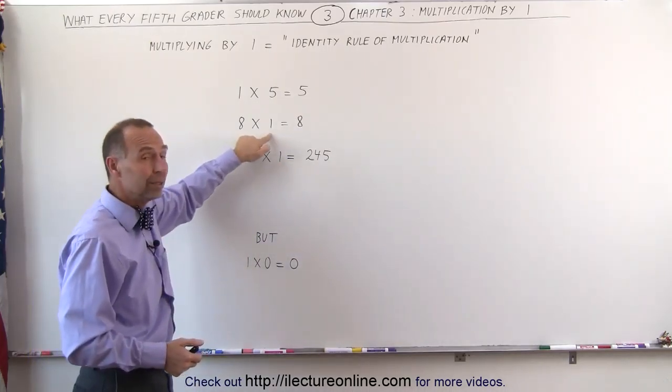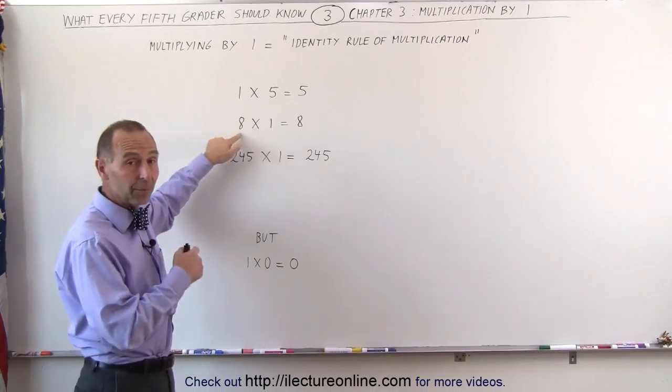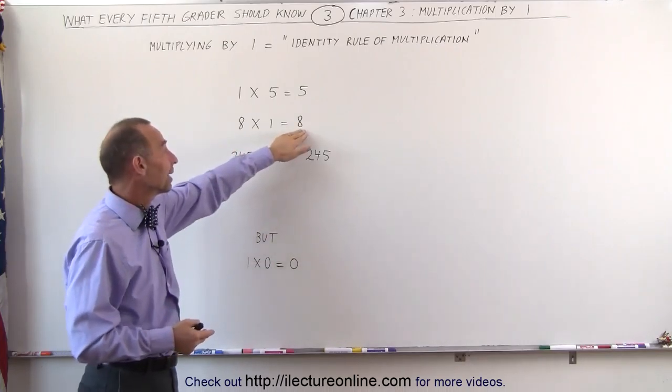Or if you write 8 times 1, no matter how many times you multiply the number 1 by some other number, you always get that same number back. 8 times 1 means there's 8 of them, and therefore you get back 8.